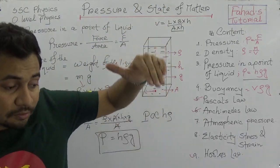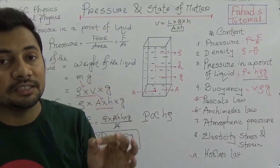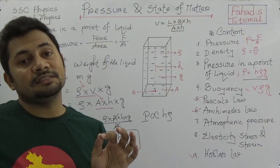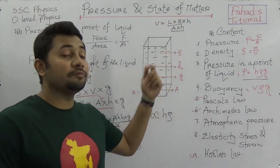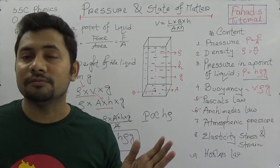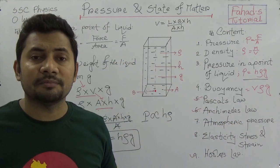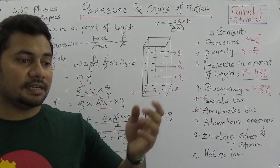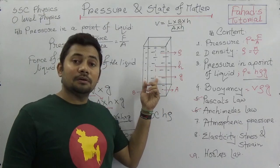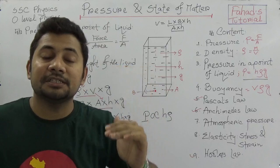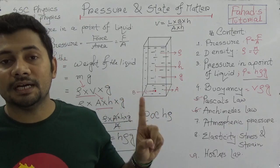We get more pressure as we go deeper because the height from the surface increases, so pressure definitely increases. Density is also a factor: if the density of the liquid is higher, the pressure will definitely be higher. For example, water at 4°C has a density of 1000 kg/m³, kerosene is 800 kg/m³, and mercury is about 13,600 kg/m³. So if we use mercury instead of water, the pressure will be much higher, because pressure depends directly on both height and density.